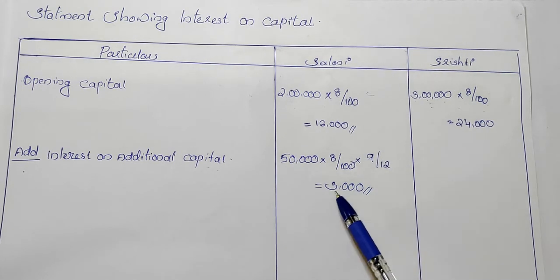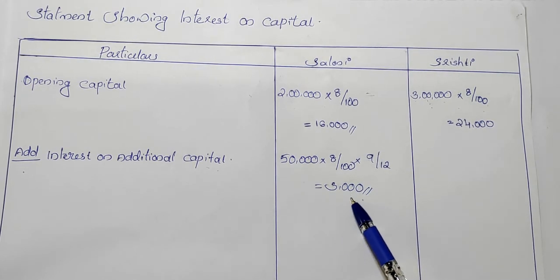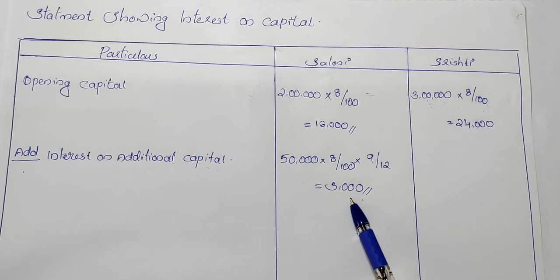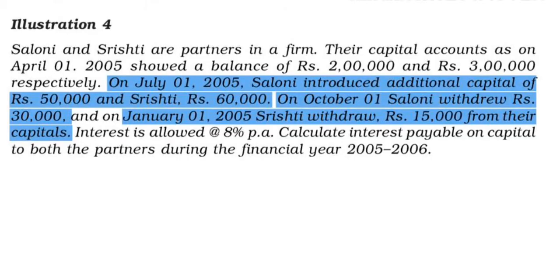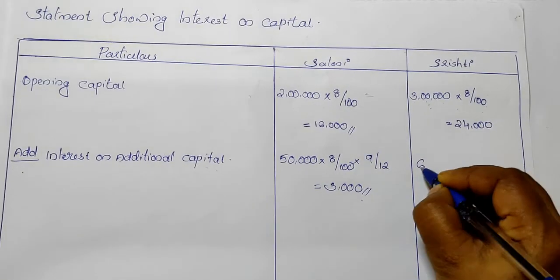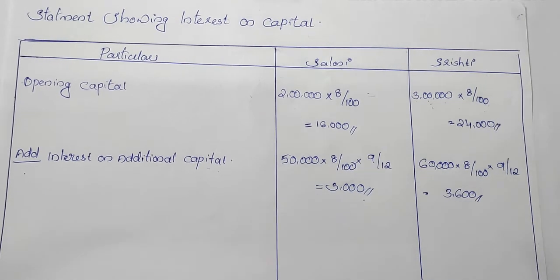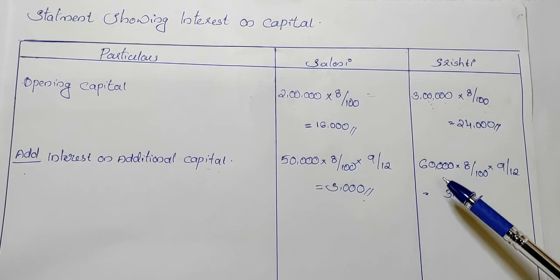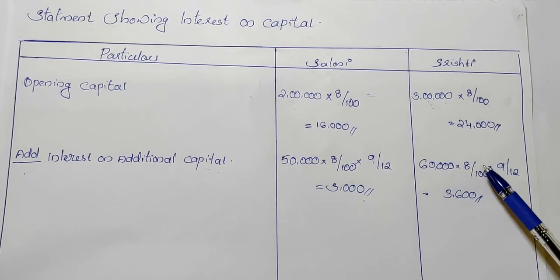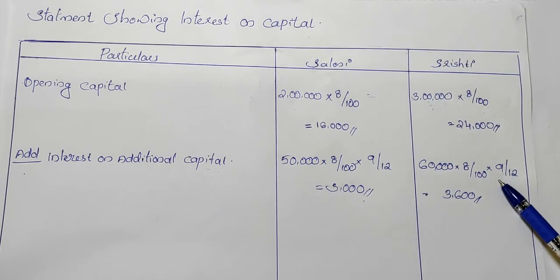We divide by 12 to calculate the interest on the additional capital from July 1st. We have to give interest on the additional capital contributed from July 1st using the same method.